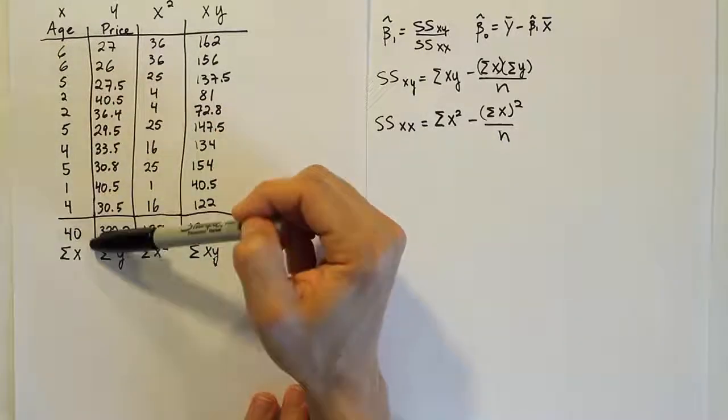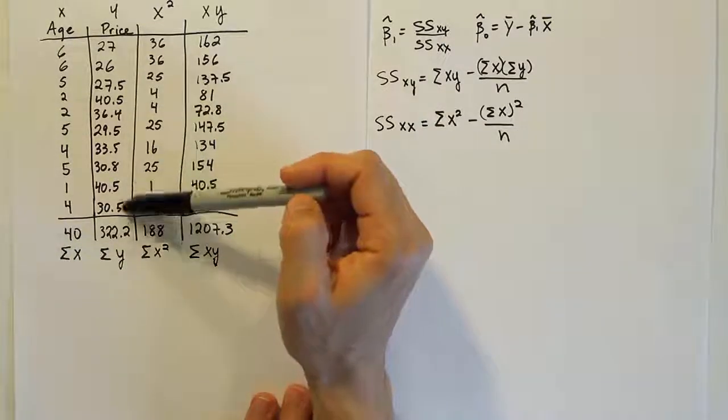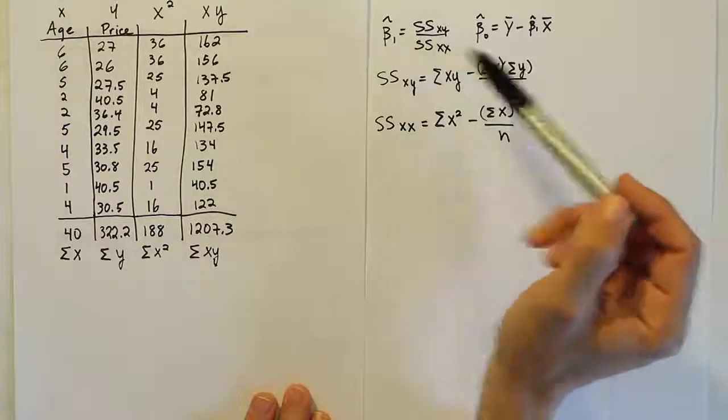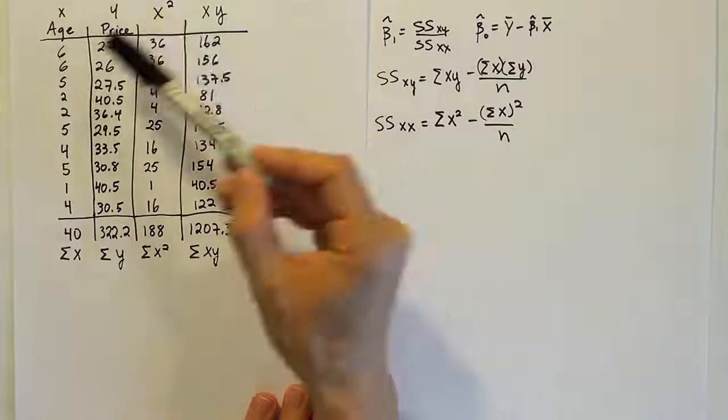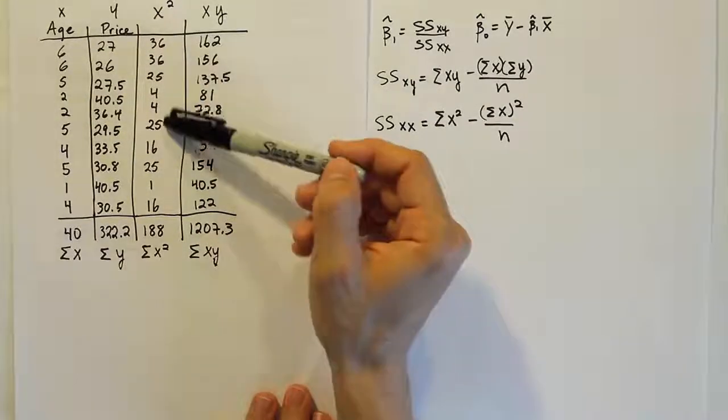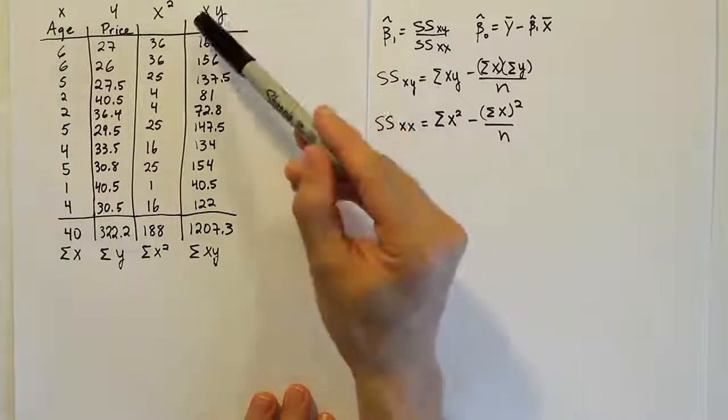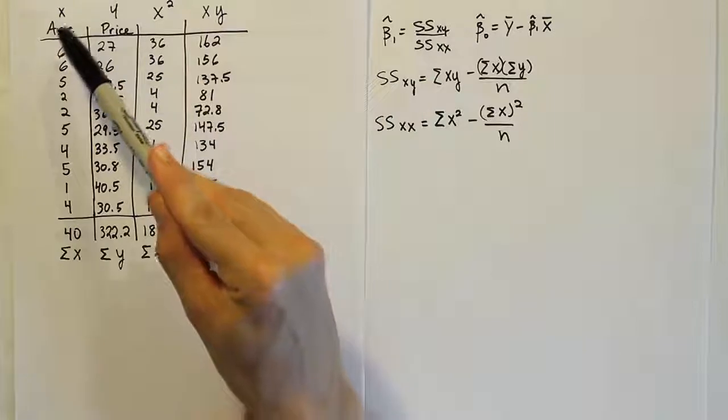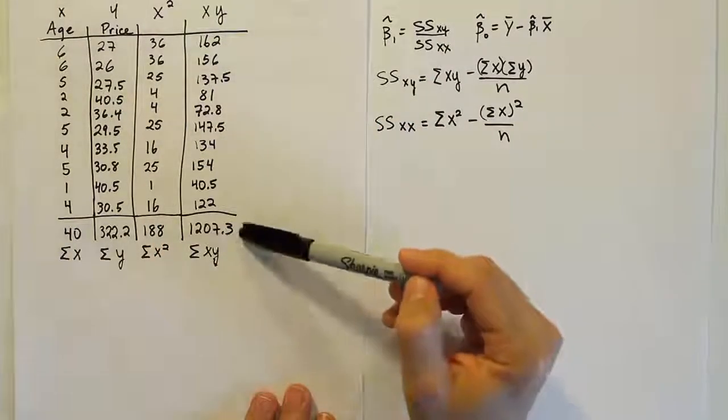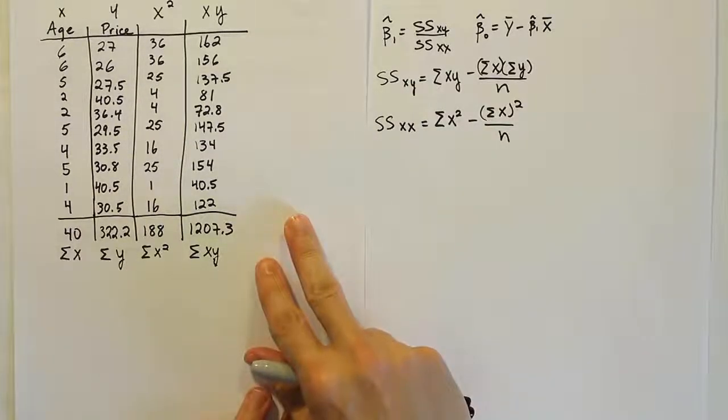I added the age column together to get the sum of x. That gave me 40. I added all the numbers in the price column together to give me the sum of y. So I have those two totals. I need those in my formula. Then from there, I had to square all the x's. So I did 6 squared, 6 squared, 5 squared, so on and so forth. And I summed all the results to get the sum of x squared. And then finally, the last thing I did was I multiplied both the x and the y together and produced this column of products. And then I added them all up to get the sum of x times y. So I think you can do that yourselves. But that's what I've done there, basically.